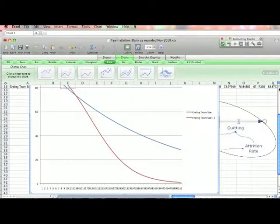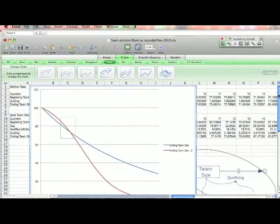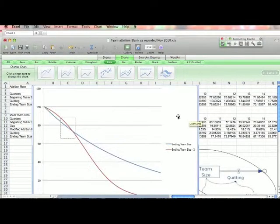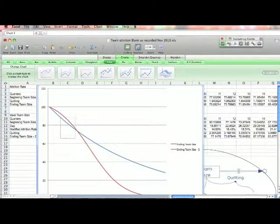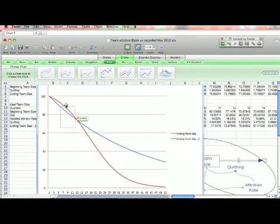So you can see with this one that basically the ending team size, it doesn't fall as fast because it starts at 5% if you recall.